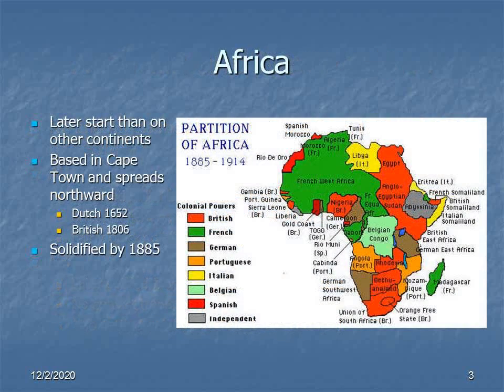In South Africa, the situation is different, though the period of settlement is roughly the same, as the British didn't seize control of the colony at Cape Town until 1806, prior to which it had been Dutch. Subsequent to 1806, and particularly following an influx of settlers beginning in 1829, the settlement of South Africa by English speakers was also fairly rapid over the course of the 19th century.